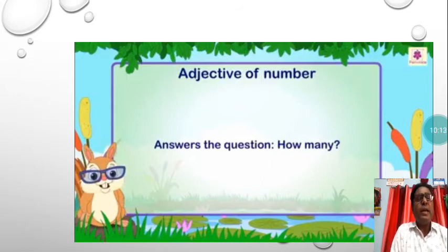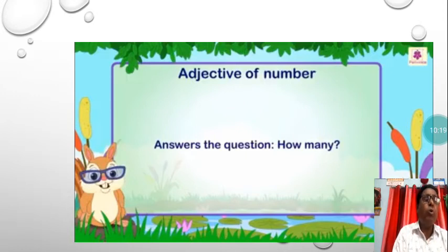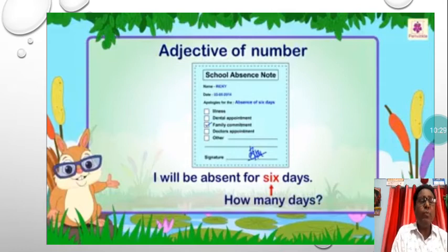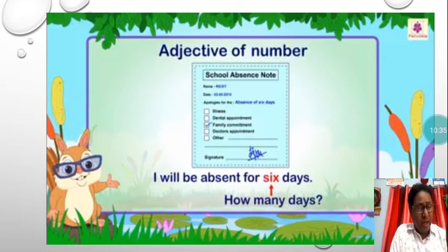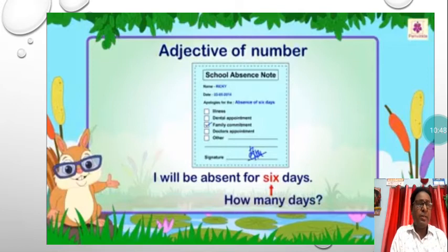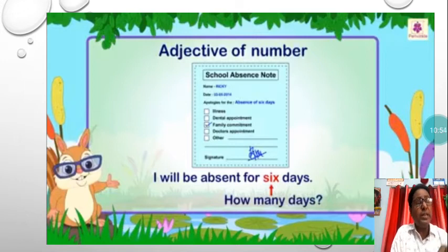Adjective of number answers the question: how many? For example: I will be absent for six days. Here, how many days? The answer is six days. So six, before the noun days, is an adjective. It is telling the number of days, describing and giving information about the number of days. So it is called adjective of number.